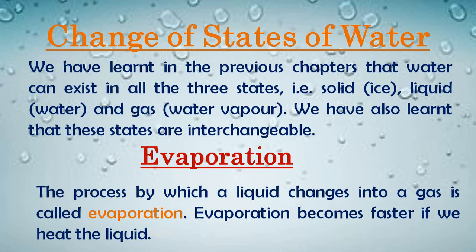Change of states of water — we have learned in the previous chapters that water can exist in all three states: solid ice, liquid water, and gas — water vapor. Jab water freeze hone ke baad ice banta hai — that is the solid state of water. Jab wo liquid form mein hota hai — that is the liquid state. Aur jab water ki vapor banti hai, then that is known as the gaseous state of water. So water is present in three states: solid, liquid, and gas.